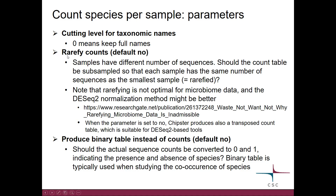Then you need to decide if you want to rarefy counts — the default here is no. What does this mean? As we have seen already, the samples have different numbers of sequences. So here you need to decide should the count table be subsampled so that each sample in the end has the same number of sequences as the smallest sample — do you want to rarefy counts, in other words?